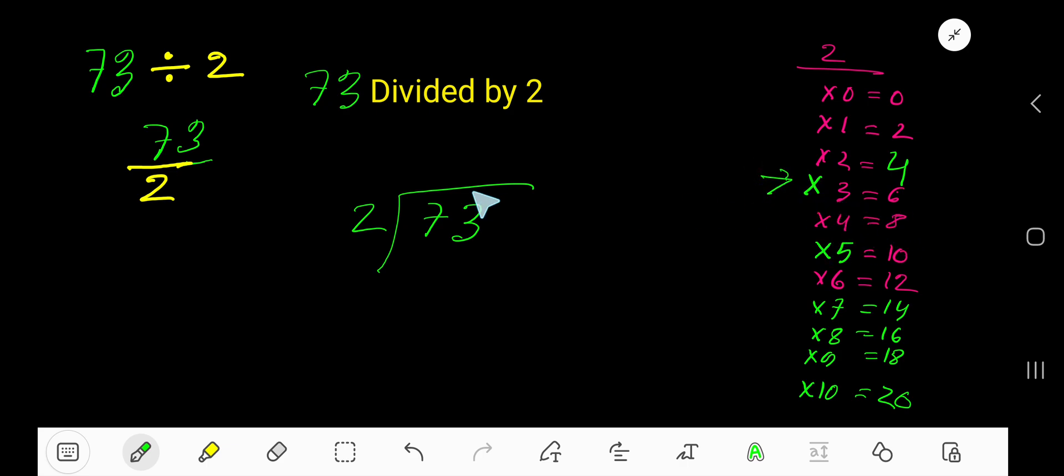3 times 2 is 6. Subtract, we get 1. Bring down this 3. 2 goes into 13 how many times? Look, 6 times is 12, 7 times is 14 which is greater, so 6 times.